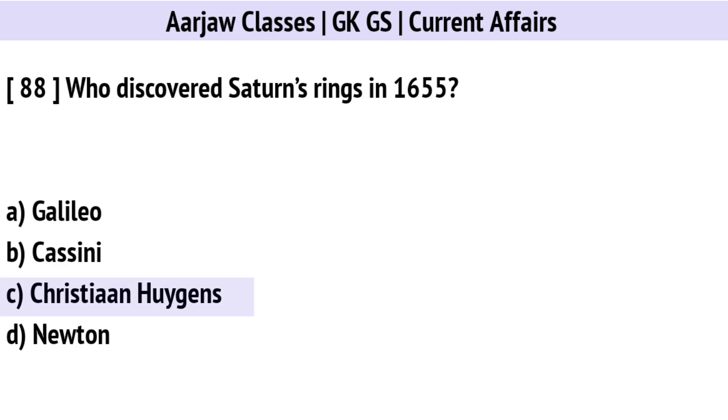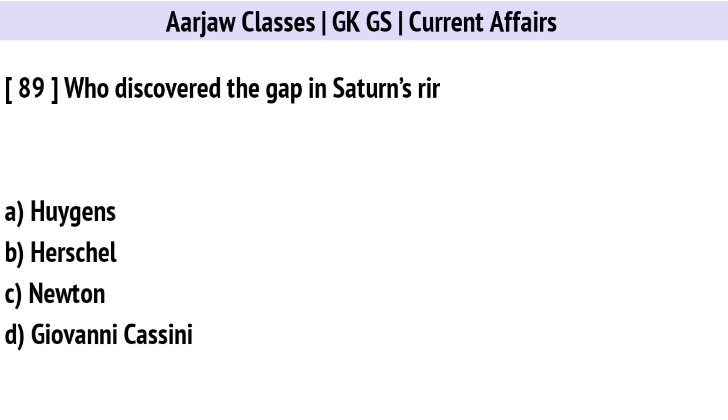Who discovered Saturn's rings in 1655? Correct option is C: Christiaan Huygens.